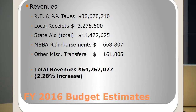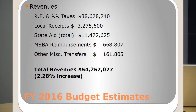Local receipts — made up of licenses, permits, interest earned on money in the bank, rental fees, and payments in lieu of taxes from nonprofits — make up about $3.2 million in revenue. The state aid number we're estimating at $11,400,000 based upon the governor's budget submitted to the legislature. At this date, numbers from both the House and Senate vary slightly from the governor's budget, and any additional revenues promised to East Longmeadow are minimal at best.